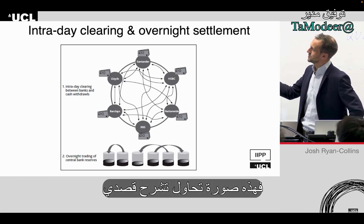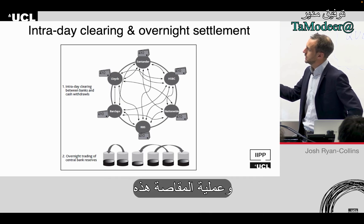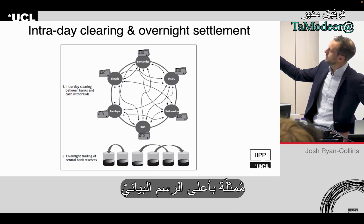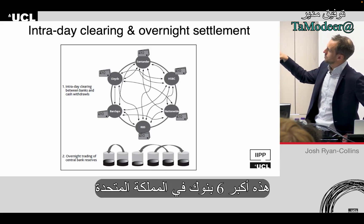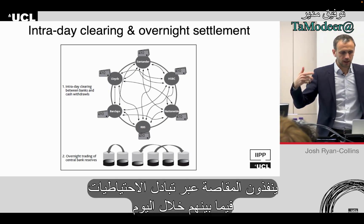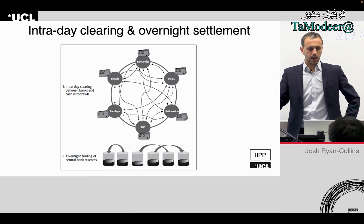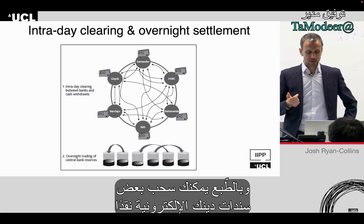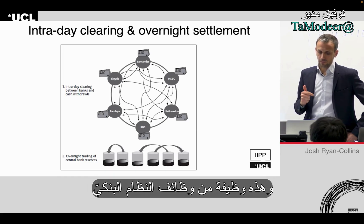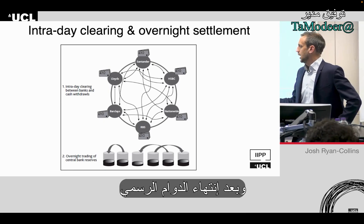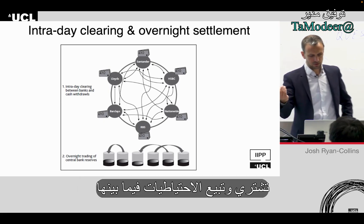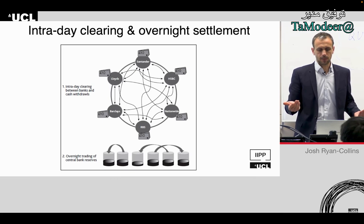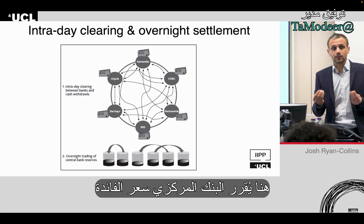This visual represents the clearing process. The top diagram shows the major UK banks clearing by swapping reserves with each other during the day. They also allow you to withdraw cash — converting electronic IOUs to physical cash. Overnight, those commercial banks trade reserves with each other to ensure they all have sufficient central bank reserves to maintain liquidity.